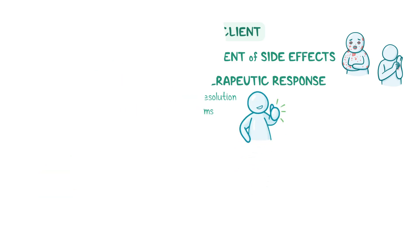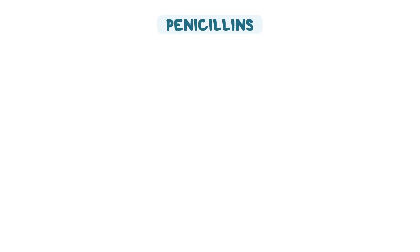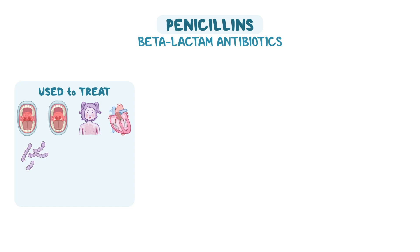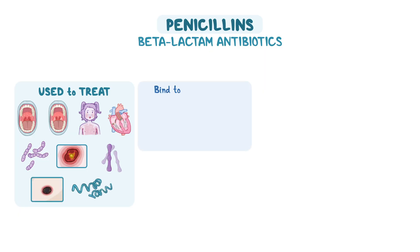As a quick recap: penicillins belong to the pharmacological group of beta-lactam antibiotics and are used to treat a wide range of infections, including streptococcal infections like pharyngitis, tonsillitis, scarlet fever, and endocarditis, as well as pneumococcal infections, staphylococcal infections, diphtheria, anthrax, and syphilis. They work by binding to the enzyme penicillin binding protein, or PBP, to prevent it from working.